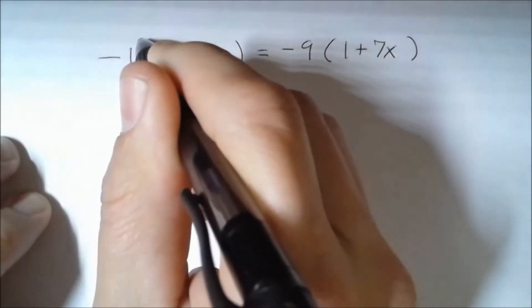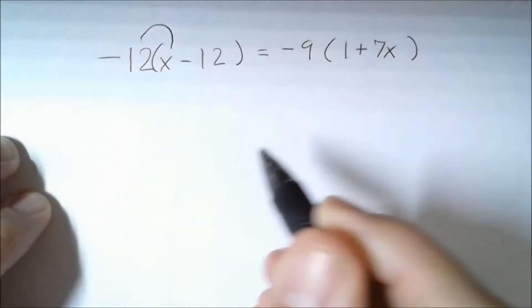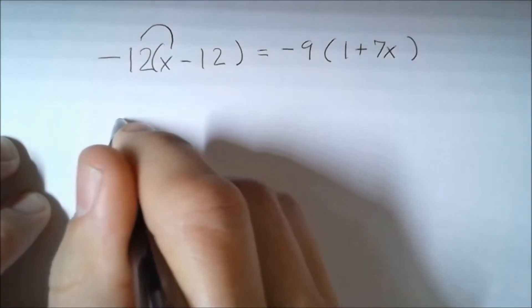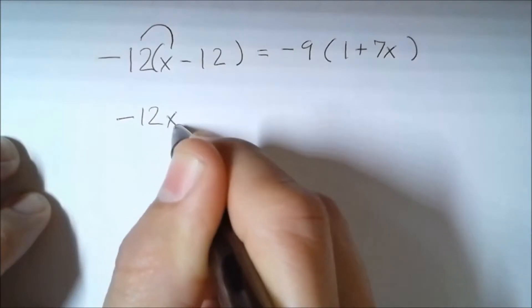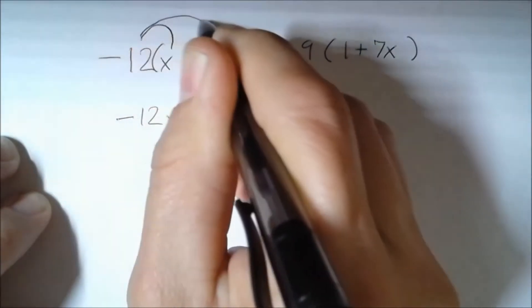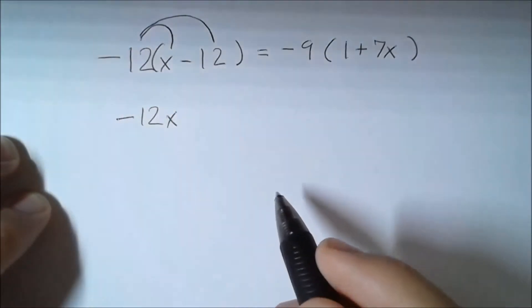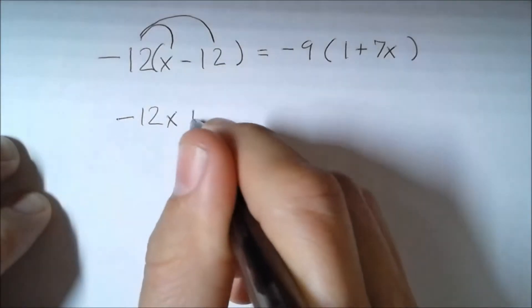I'm going to distribute the negative 12 to my x, so that's going to be negative 12x. Then I'm going to distribute the negative 12 to negative 12, which is going to give me a positive 144.